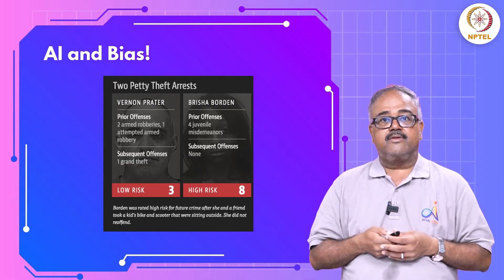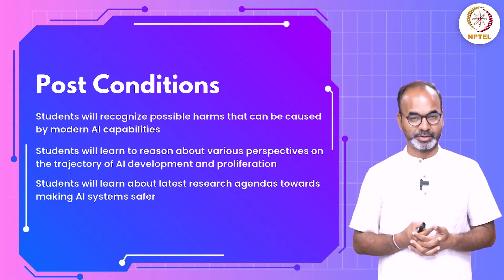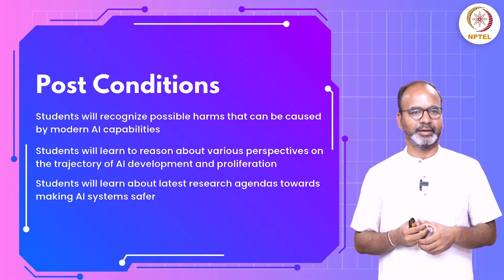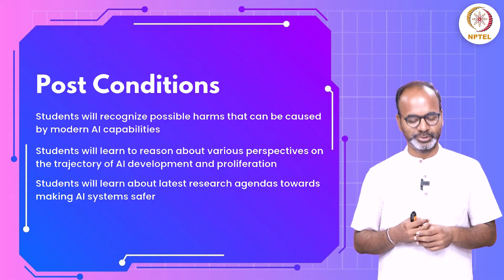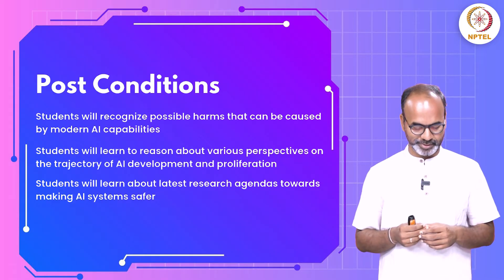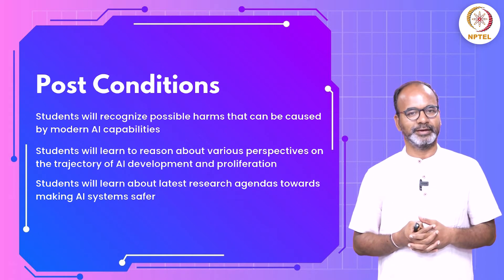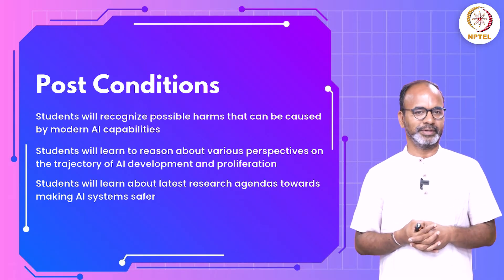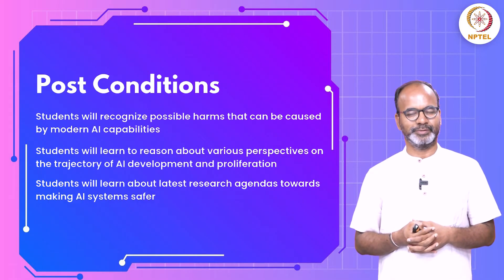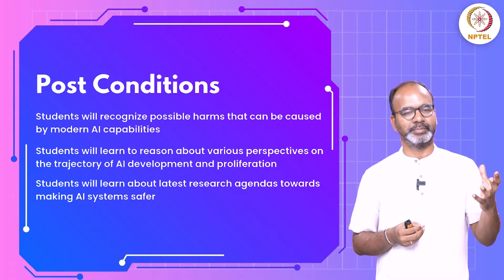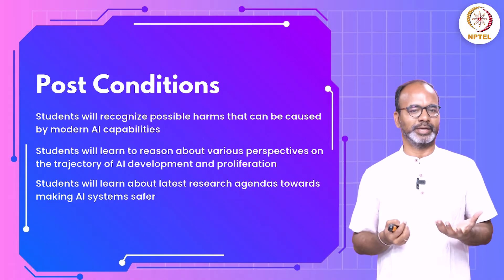These are some of the things we will be discussing during the course. The post-conditions for the course are: students will recognize possible harms caused by modern AI capabilities, understand AI capabilities and AI risks, and learn to reason about various perspectives on the trajectory of AI development and proliferation — what are the ways AI is penetrating our lives, what are the risks connected to it. Students will also learn about the latest research and agendas towards making AI systems safer, which is the main goal of this class.